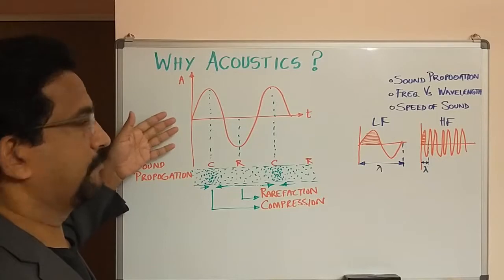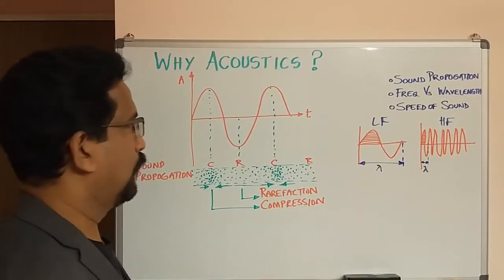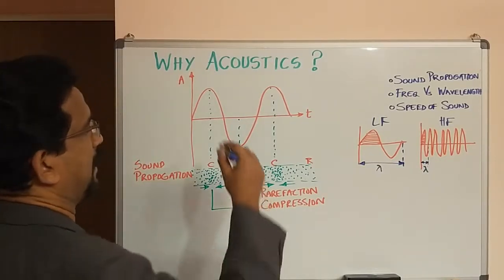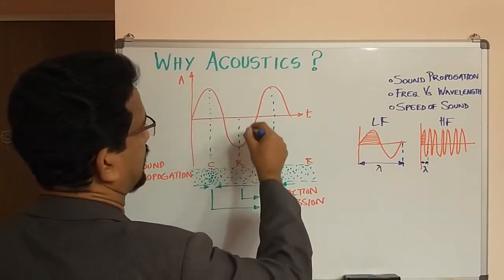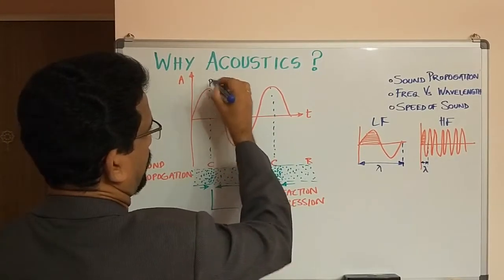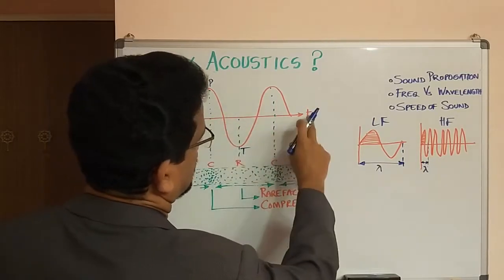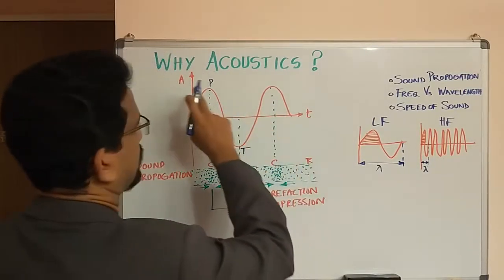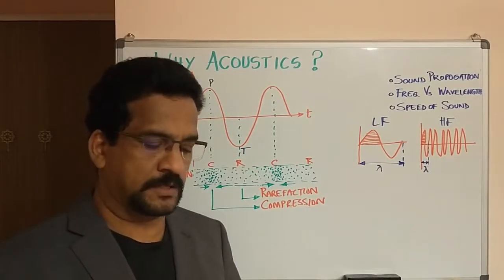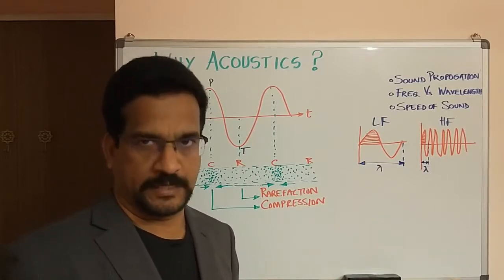This is a very familiar curve — we call it a sine wave or a sinusoidal wave, which we all must have studied during primary school. This is one complete cycle and it has a peak and a trough. The x-axis is a time axis, A is the amplitude, and this is a sine wave used typically in all electrical and electronics study.